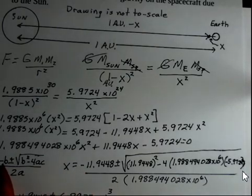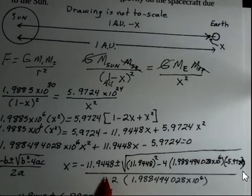So, there's a minus sign in the formula for the quadratic formula. So, that produces a minus 11.9448 for the minus b.